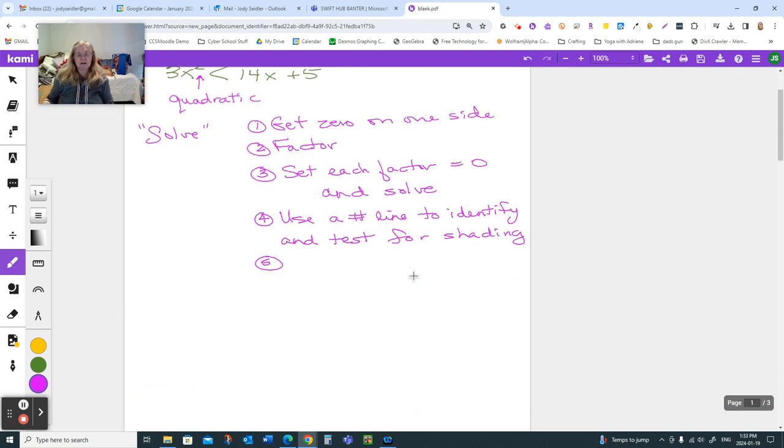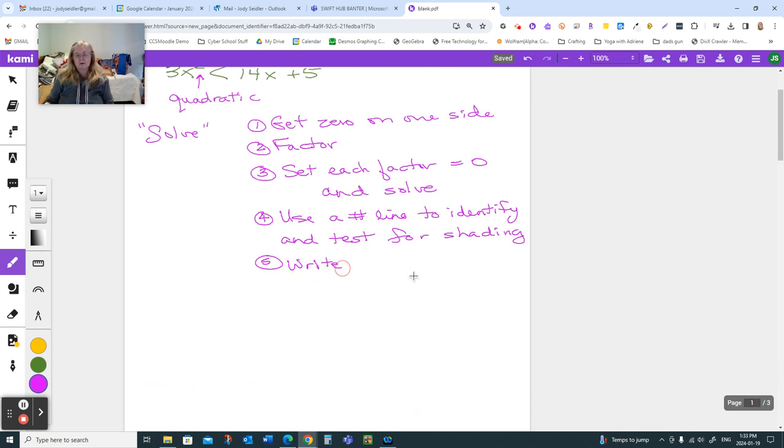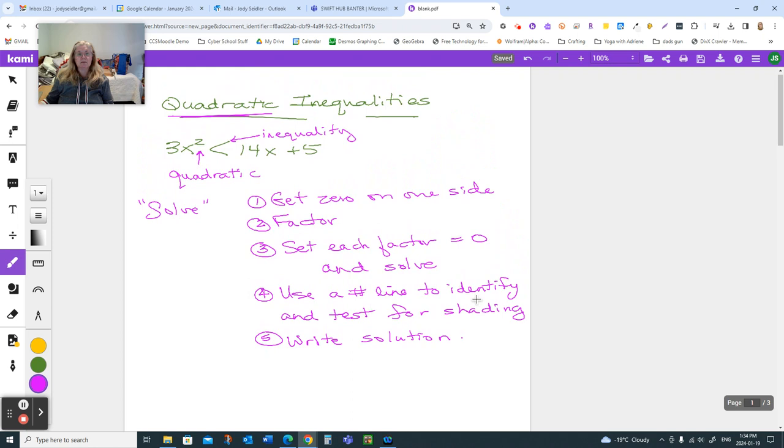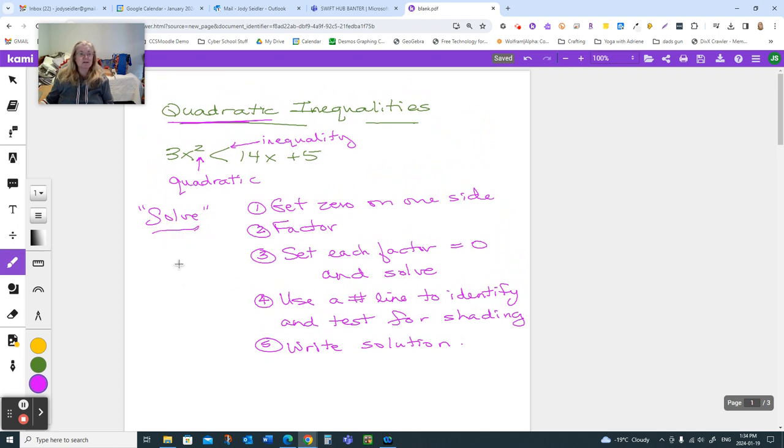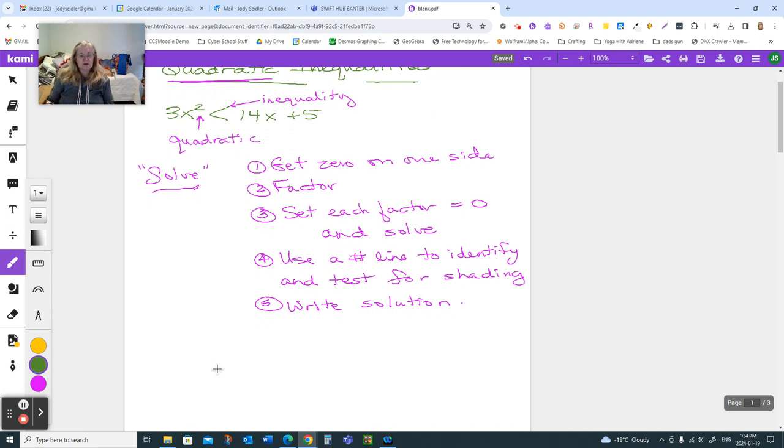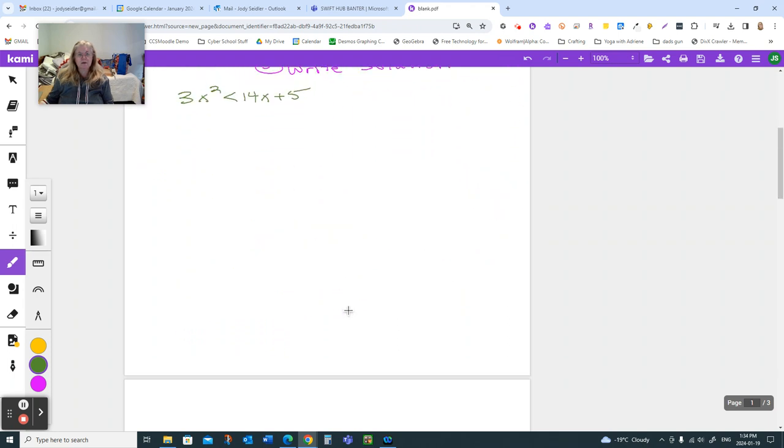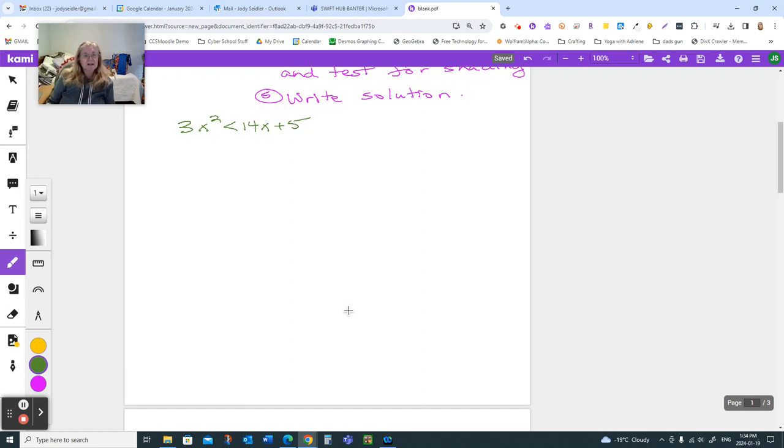And then the last thing we're going to do is, based on what we can see on that number line, we're going to write our solution. And that solution is important because we're supposed to solve, we better end up with a solution. So let's move that inequation down here and see if we can solve it. So we're going to solve, we need zero. I like the squared term positive because it makes everything happy when I go to factor it. So I'm going to leave that alone and I'm going to move everything over to it. Now to move those things over there, I subtract them from both sides.